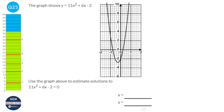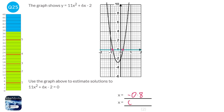To find solutions for quadratics on a graph, all you need to do is find where the graph meets the x-axis. The coordinates where this graph meets the x-axis are here and here — that would be minus 0.8 and 0.2. These are also called roots.